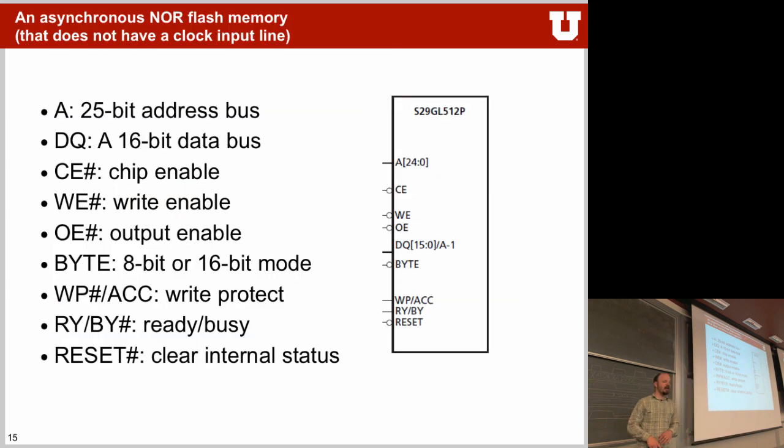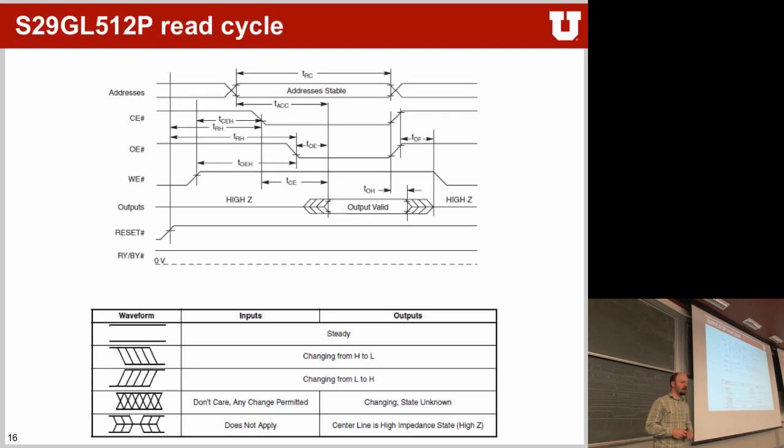Let's look at a different chip. This is an asynchronous NOR flash memory, has up to 25-bit address bus, can have a 16-bit data bus. So remember the one before had only 8 data. This now has 16-bit data. Chip enable, write enable, output enable, similar as before. It then has a byte interface which can actually switch this chip between 8-bit mode and 16-bit mode. We have a write protect and a read busy signal and you have a reset. The timing diagram looks slightly more complicated because now the outputs are high Z. You have the reset line, the ready bit in this particular case. So this is a read cycle. Chip enable goes down, output enable goes down, write enable goes up and the output becomes valid at some point.